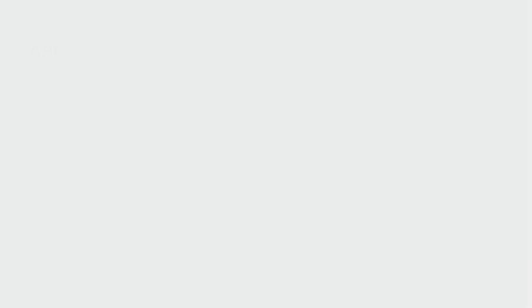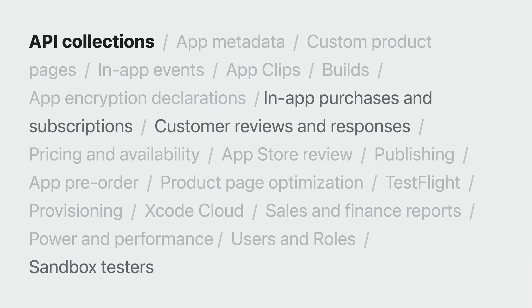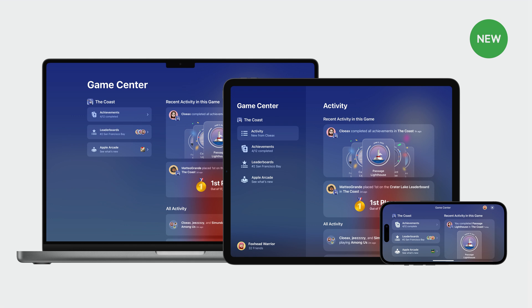Once you have your app in the hands of customers, you can explore how to automate with the App Store Connect API. The App Store Connect API provides options for customizing workflows, staying in sync with your internal systems, and automating processes to save time. Our API collections allow you to automate many areas of the App Store. This year, we launched in-app purchases and subscriptions, customer reviews and responses, and the ability to manage sandbox testers. We have some great releases coming this year, including support for Game Center. These APIs will make it easier and faster to set up Game Center features and build consistent experiences across all platforms of your game.